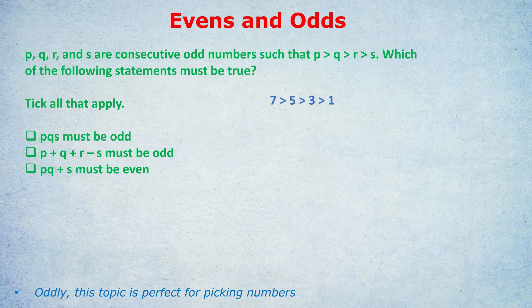Statement A: P times Q times S must be odd. Putting in our numbers, P is 7, Q is 5, and S is 1. Seven times five times one is 35, so yes it must be odd. The brilliant thing about even and odd questions when you pick numbers is that you don't have to pick a second set of numbers, because what is true for one set of evens and odds will be true for all evens and odds. An even plus an even will always be even — it's true for one, therefore true for all. So we're certain statement A gives an odd answer.